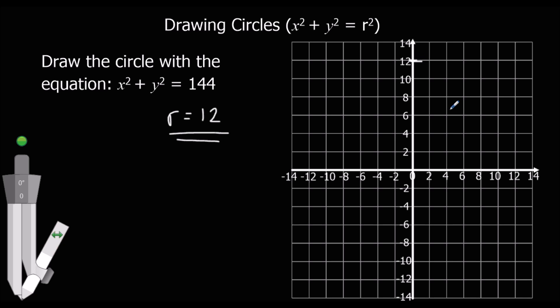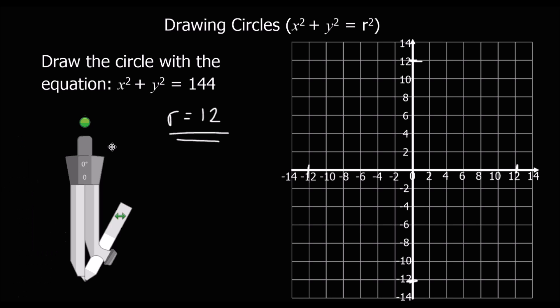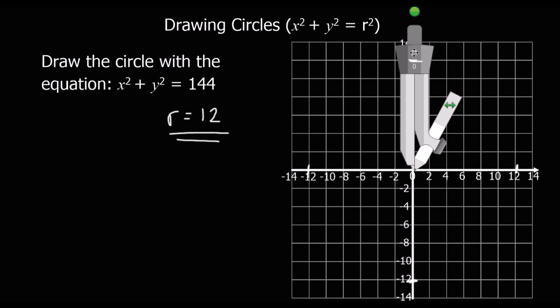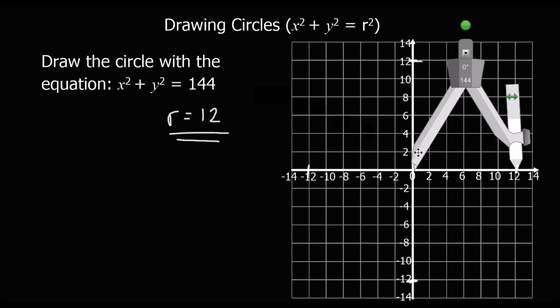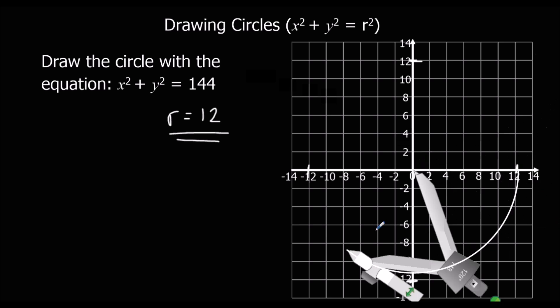So it's going to go through 12, 12, minus 12, and minus 12. So we'll try it again, although unfortunately it will miss. So we'll extend that out to 12, and we'll go around.